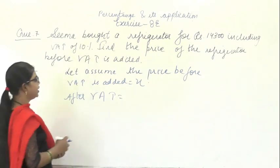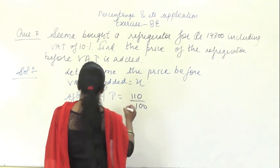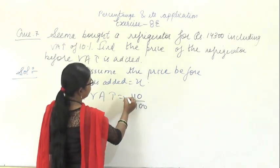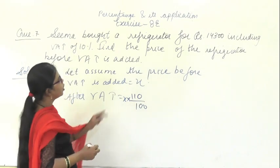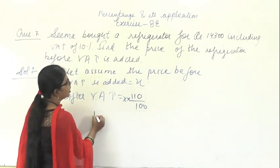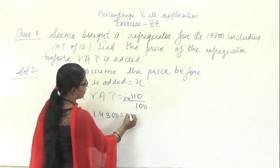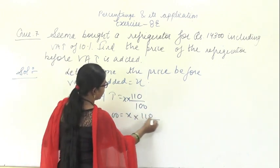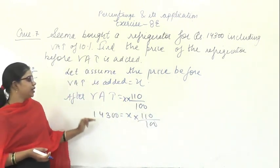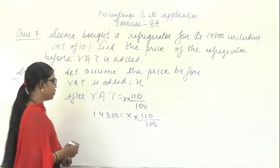After adding VAT of 10%, the total becomes 110/100 × X, which equals 14,300. From here we solve for X.